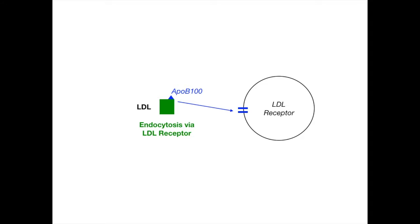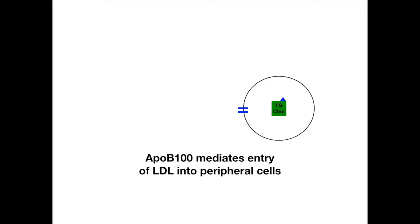LDL with its APO-B100 is now sitting inside the peripheral cell. This is the process whereby triglycerides and cholesterol arrive at peripheral cells from the liver. LDL came from the liver, or was converted from IDL which also went to the liver. So these triglycerides and cholesterol are coming from the liver and going to peripheral cells because LDL undergoes endocytosis into those cells. That's the reason LDL is the bad fat — it takes triglycerides and cholesterol from the liver and puts them into the peripheral cells.